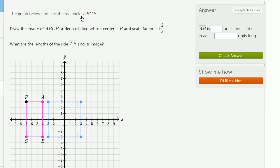The graph below contains the rectangle ABCP. Draw the image of ABCP under a dilation whose center is at P and a scale factor is 1 and 2/3. What are the lengths of the side AB and its image?